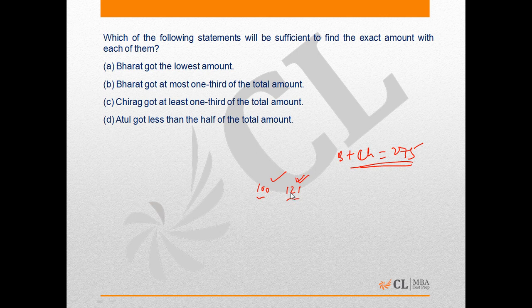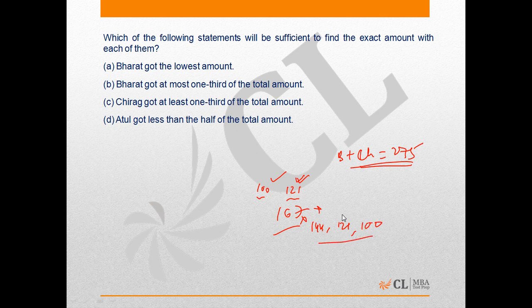Statement 2 says Bharat got at most one-third of the total amount, meaning at most 167. Since Bharat's amount is a perfect square, it could be 144, 121, or 100 — giving Chirag three different corresponding amounts. Therefore, statement 2 is also not sufficient to answer the question.